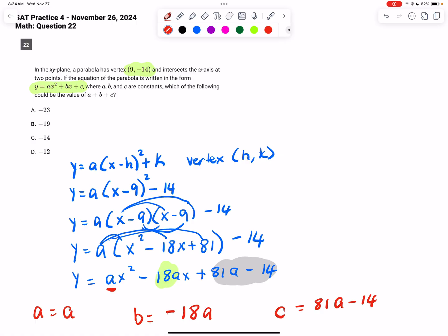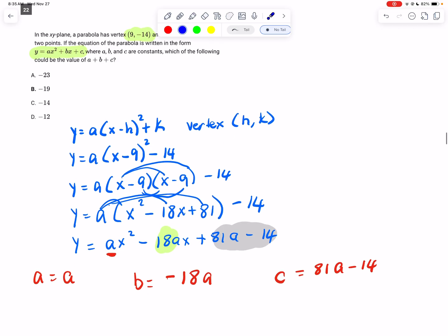Alright, so going back to the very original question, it said to us that they want something that could be the value of a plus b plus c. So that's the original question. So in my perfect world, my perfect world, I would just add a plus b plus c, so that's this plus this plus this, and I would get one of these numbers.